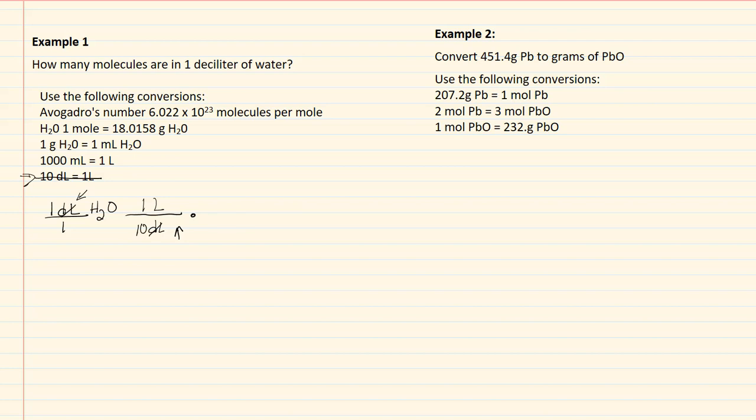So deciliters is gone now and leaves me with liters. So looking now at what I have for liters, I have this conversion. Since I have one liter on top, I'm going to put one liter in the denominator, and my other part of my conversion is 1000 milliliters. So liters is gone.